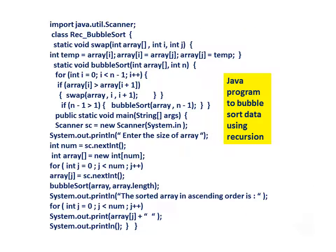Java program to bubble sort data using recursion. Import java.util.Scanner. Class RecBubbleSort. Static void swap(int array, int i, int j): int temp equals array[i]; array[i] equals array[j]; array[j] equals temp.